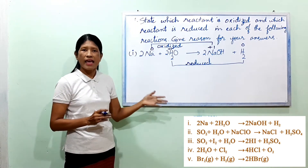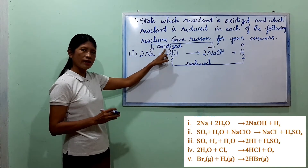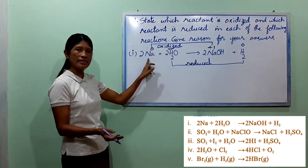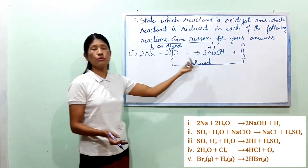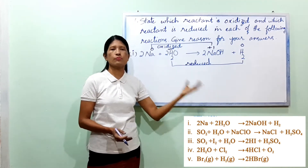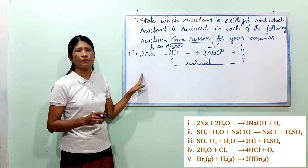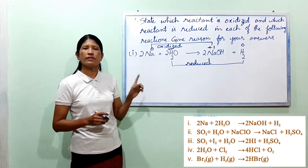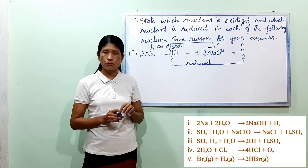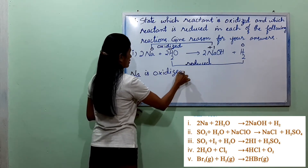Which reactant is oxidized? And which reactant is reduced? Na is oxidized. Which reason? Partially because the oxidation number of Na changes from 0 to +1. Na is oxidized because the oxidation number of Na goes from 0 to +1.